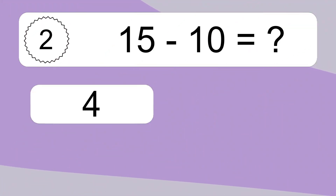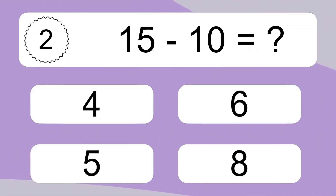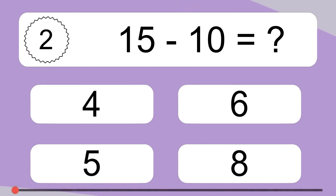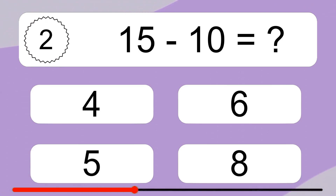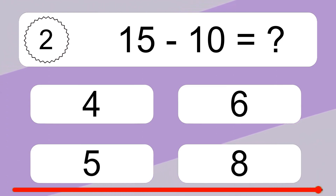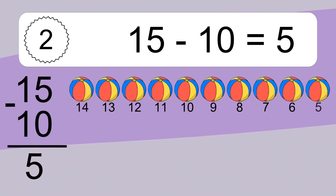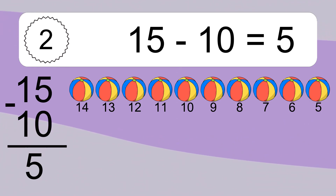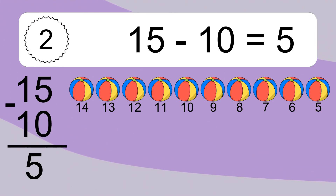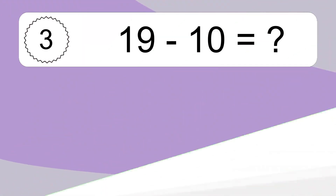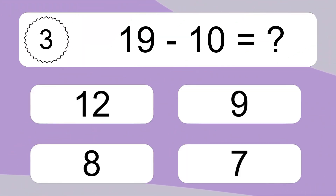15 minus 10 equals what? 15 minus 10 equals 5. Let's count it: 14, 13, 12, 11, 10, 9, 8, 7, 6, 5.